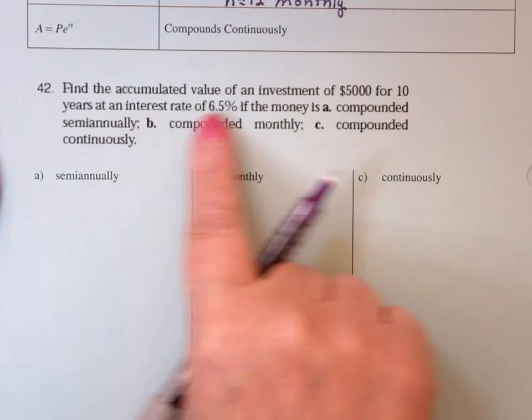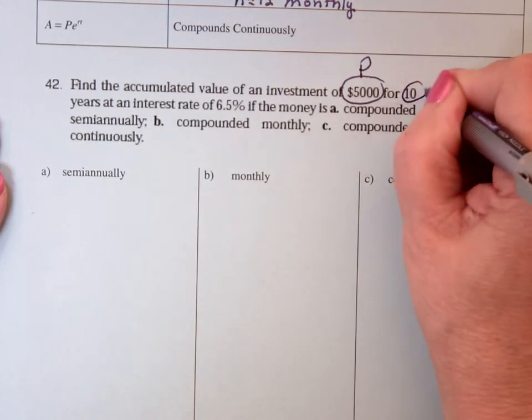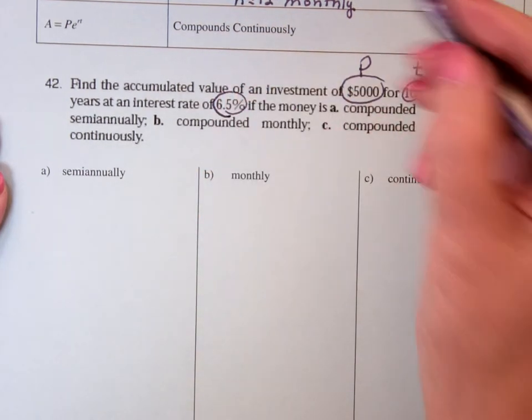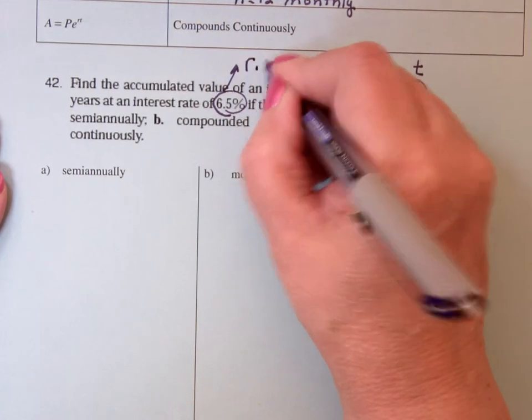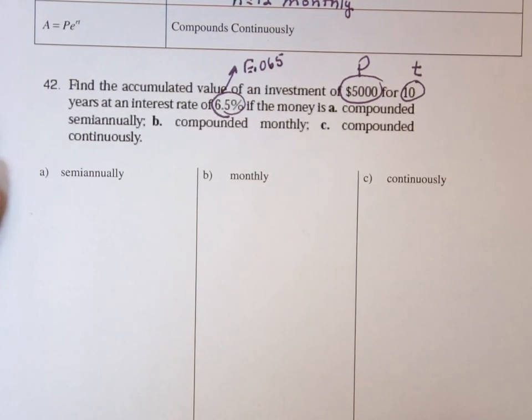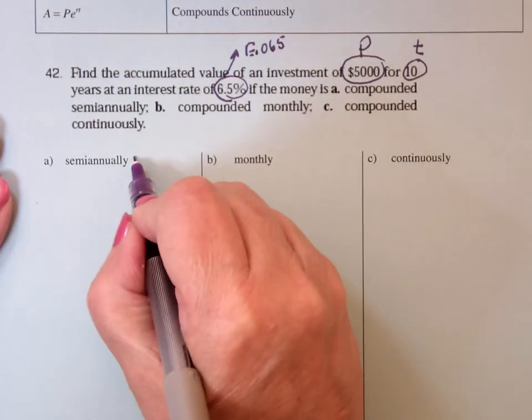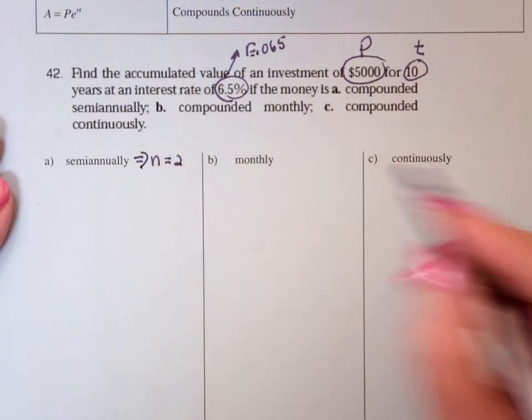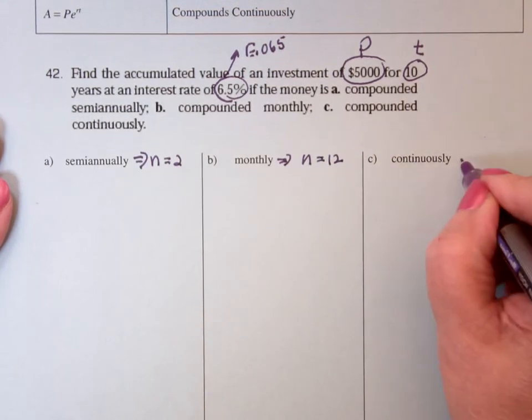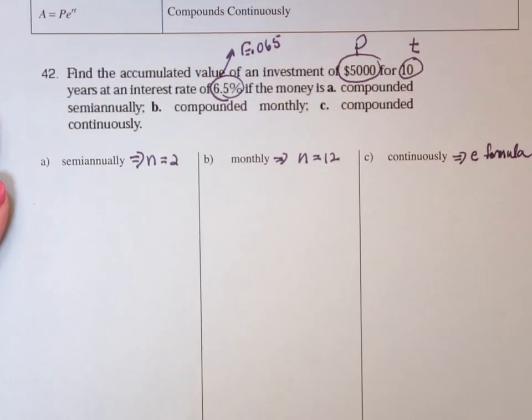And it says find the accumulated value of an investment of $5,000, so that tells me what P is. For 10 years, that tells me what T is. At an interest rate of 6.5%, so that means R is .065, because R is a decimal. And then compounded in three different ways. Semi-annually means N is 2. Monthly means N is 12. And continuously, this is the E formula.